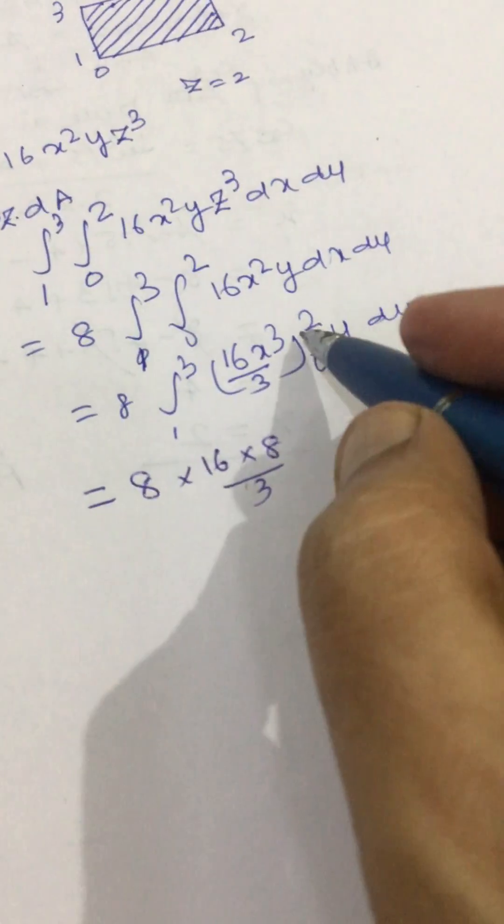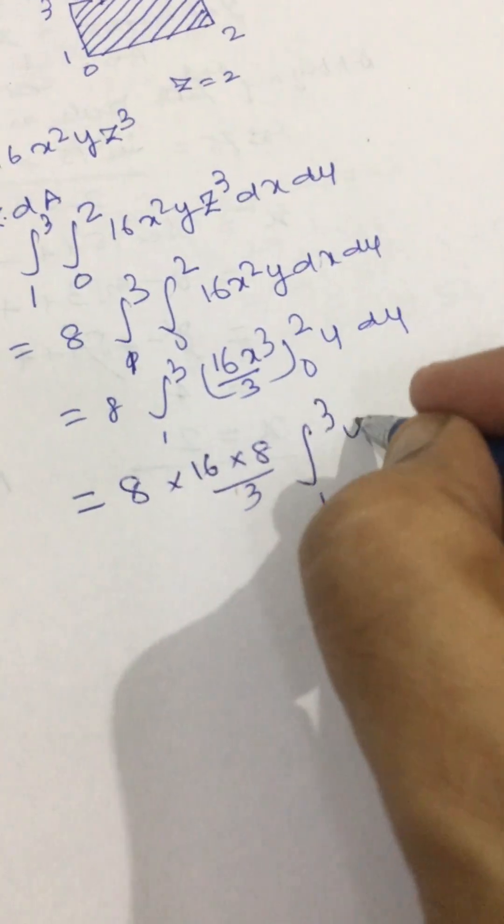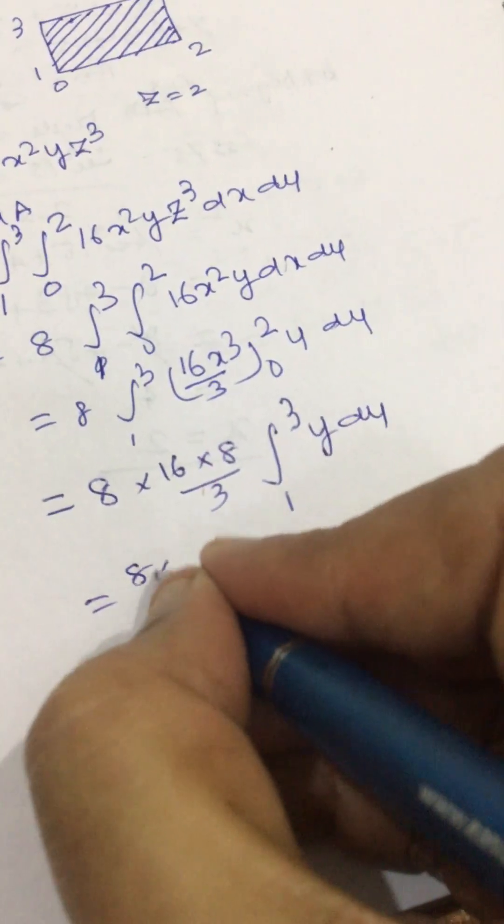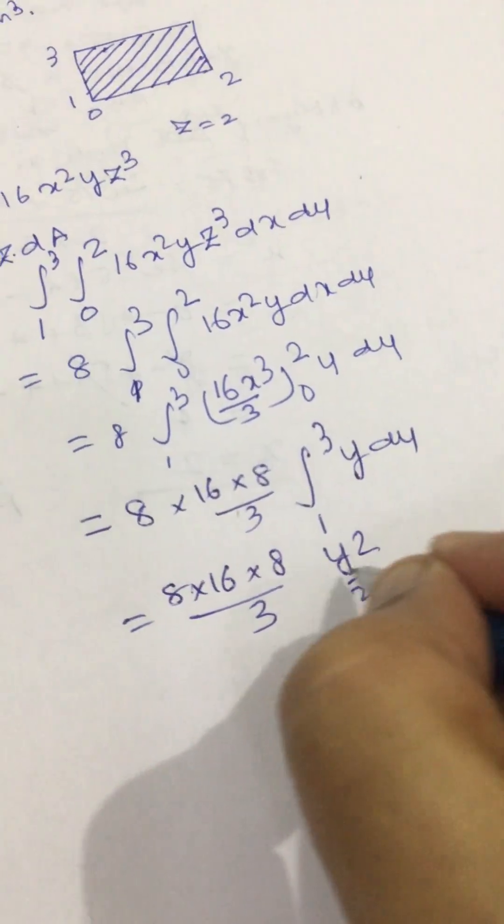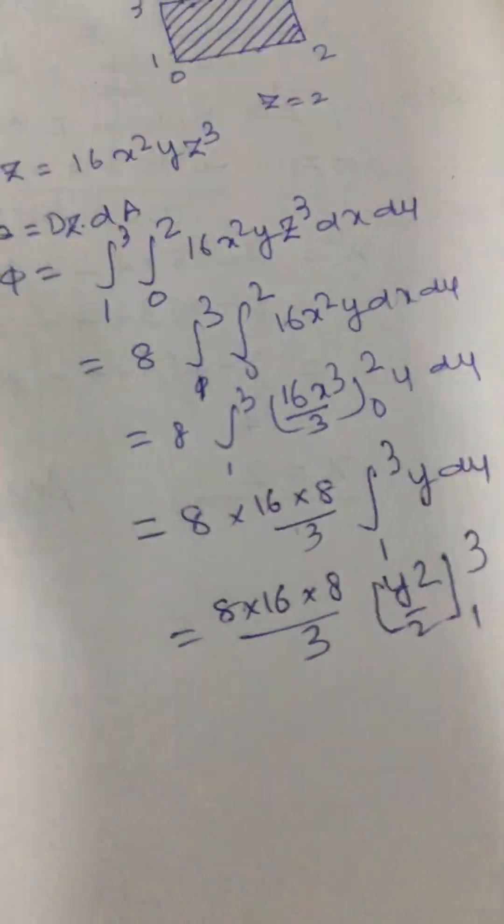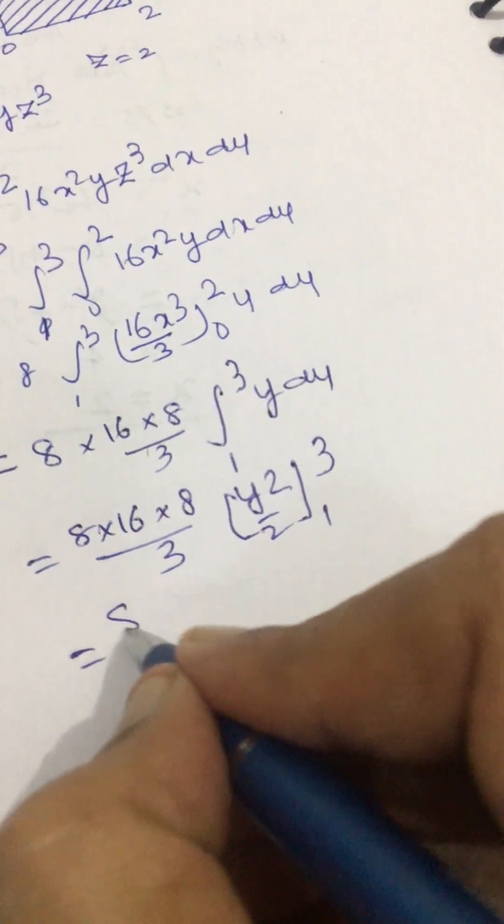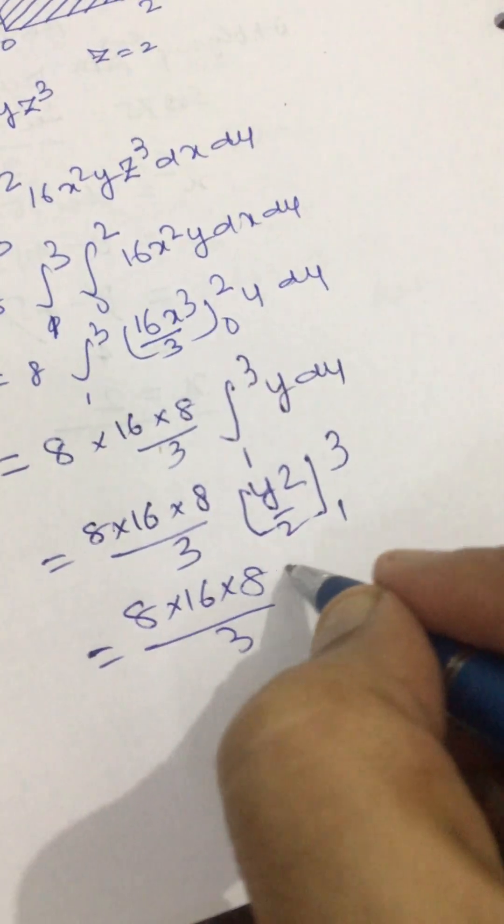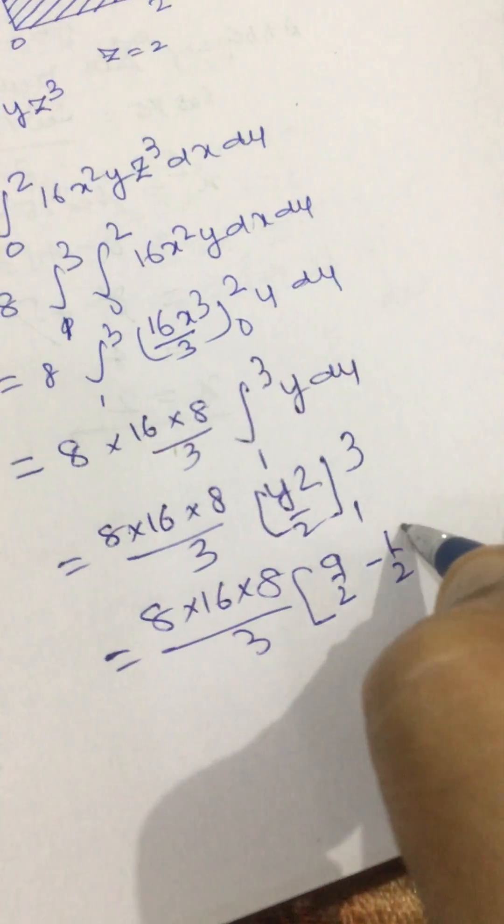This is 1 to 3, and we integrate it, so we are left with 16x^3/3, and this limit is 0 to 2, and this is y dy. Now input value of x.